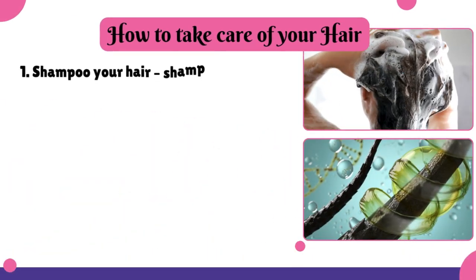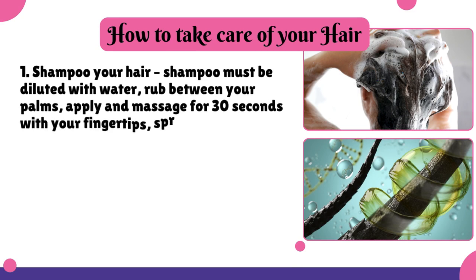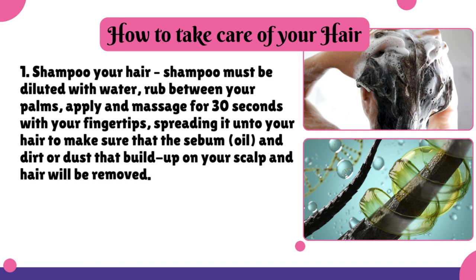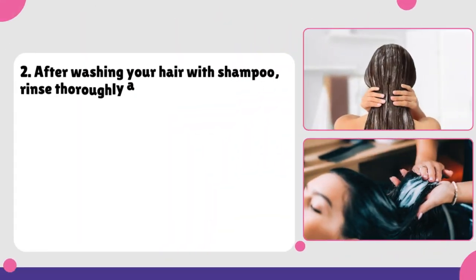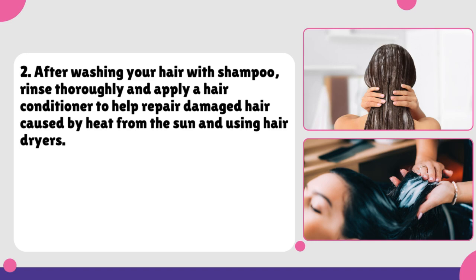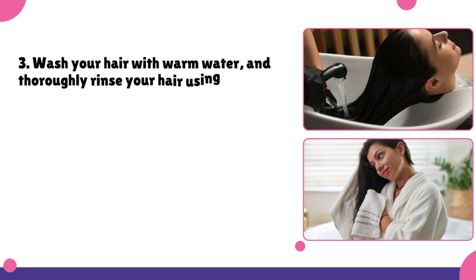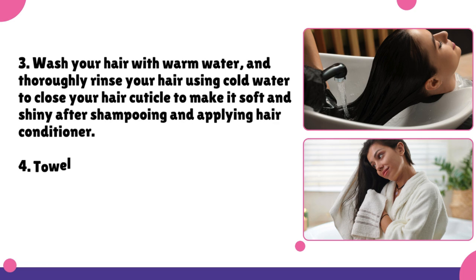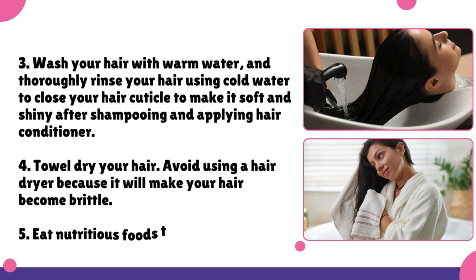How to take care of your hair. 1. Shampoo your hair. Shampoo must be diluted with water and rubbed between your palms. Apply and massage for 30 seconds with your fingertips, spreading it onto your hair to make sure that the sebum, oil, and dirt or dust that build up on your scalp and hair will be removed. 2. After washing your hair with shampoo, rinse thoroughly and apply a hair conditioner to help repair damaged hair caused by heat from the sun and using hair dryers. 3. Wash your hair with warm water and thoroughly rinse using cold water to close your hair cuticle to make it soft and shiny after shampooing and applying hair conditioner. 4. Towel dry your hair. Avoid using a hair dryer because it will make your hair become brittle.